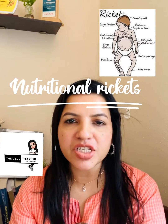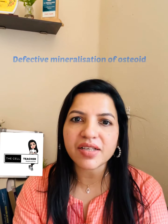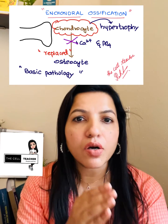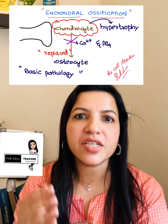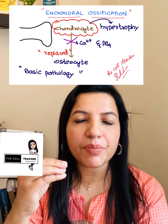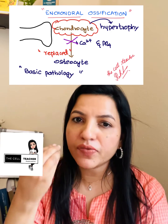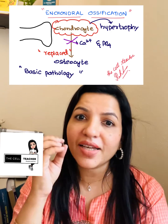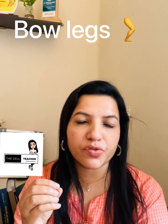Hi everyone, today we will discuss nutritional rickets. The basic defect is in the mineralization of the osteoid. At the end of the metaphyseal plate, the chondrocyte should be replaced with the osteocyte, and this happens because of deposition of calcium and phosphate. Because apoptosis is not taking place, there is chondrocyte hypertrophy.